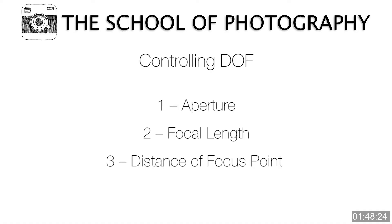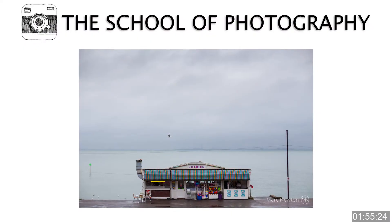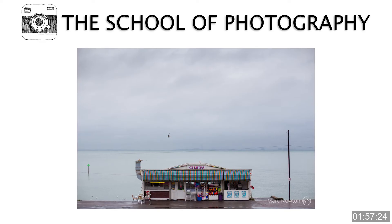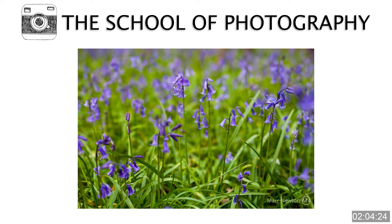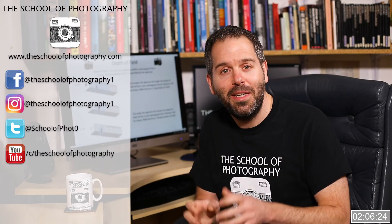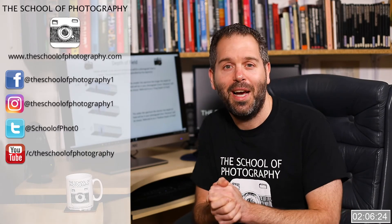The third thing that controls depth of field is the distance of your focus point to your lens. If your focus point is far away, you're going to get a longer depth of field. Whereas if your focus point is very close to your lens, you can get a really shallow depth of field.